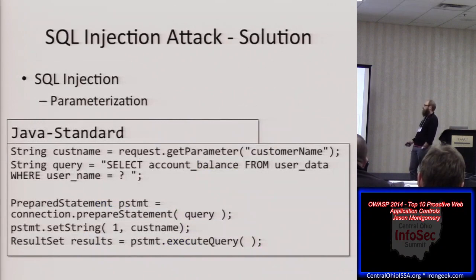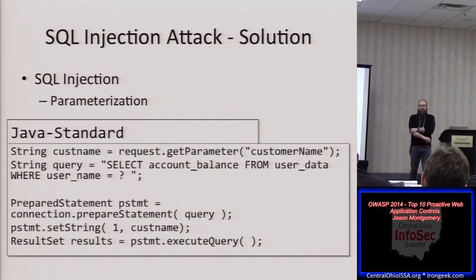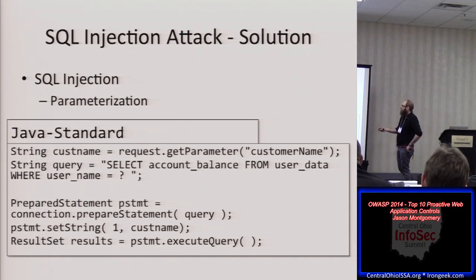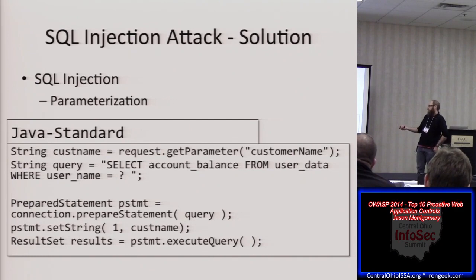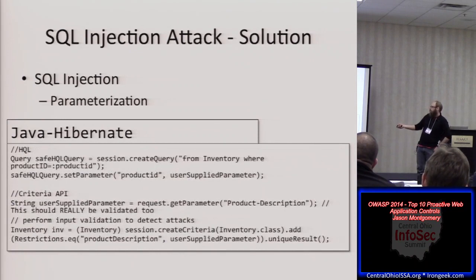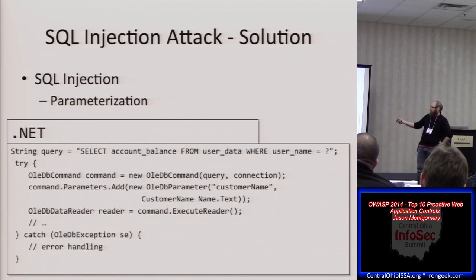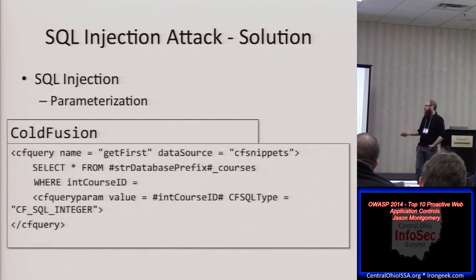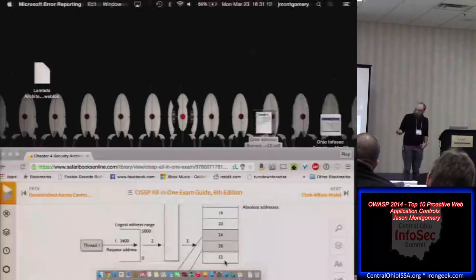The solution to these problems is simply parameterization. Parameterization makes the input a literal string — it treats it as data, not code. In Java, you use a question mark as the placeholder. In Java Hibernate you set parameters differently; in .NET with OLE DB you use a question mark; with SQL Server you use an at-sign. PHP has its own approach. There are lots of different ways to handle this in different languages, but the principle is the same. OWASP has a query parameterization cheat sheet and a secure coding practices cheat sheet you can give to your developers.